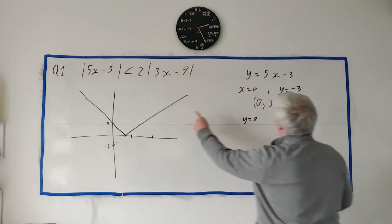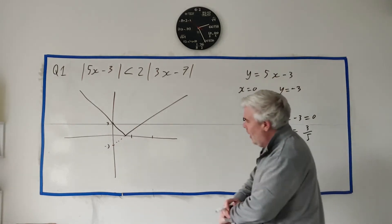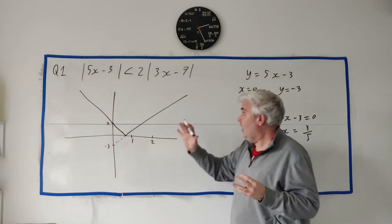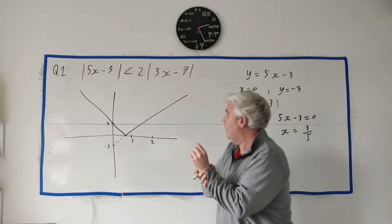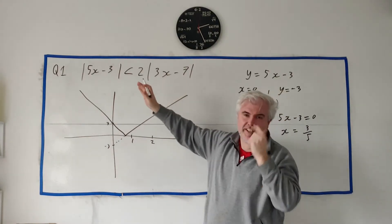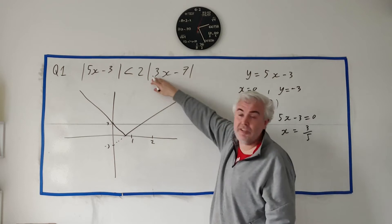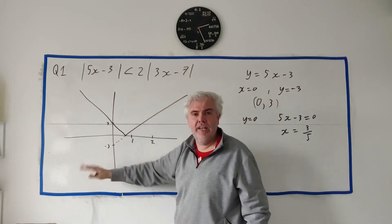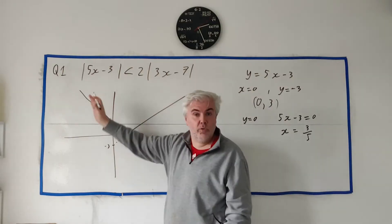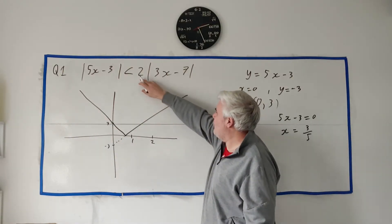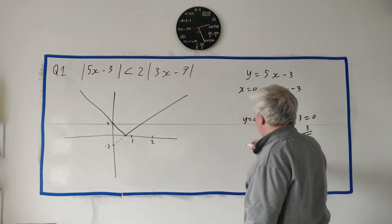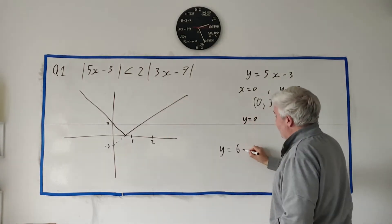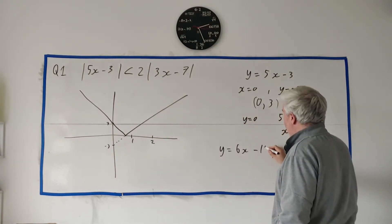The slope of this line is 5. Now for the right side, something very similar. Let's assume it's all positive first — that's what I did graphically. If we just assume the inside is positive, the right side becomes y equals 2 times (3x minus 7), which is 6x minus 14.